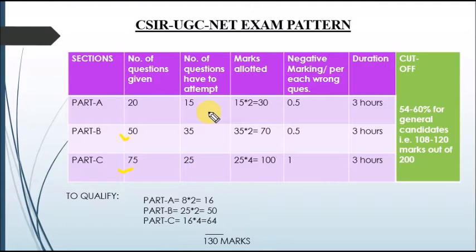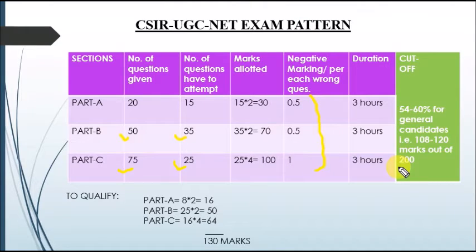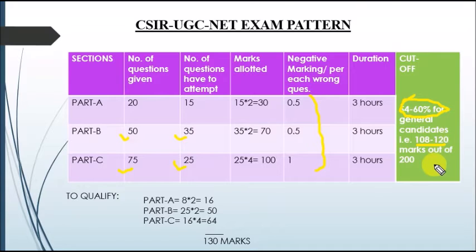You have to attempt a maximum of 15 questions from Part A, 35 from Part B, and 25 from Part C. Marks allotted for Part A, Part B, and Part C are 30, 70, and 100 respectively. The negative marking is 1/4 for each section. The general cutoff percentage for general candidates is 54 to 60%, which is 108 to 120 marks out of 200.